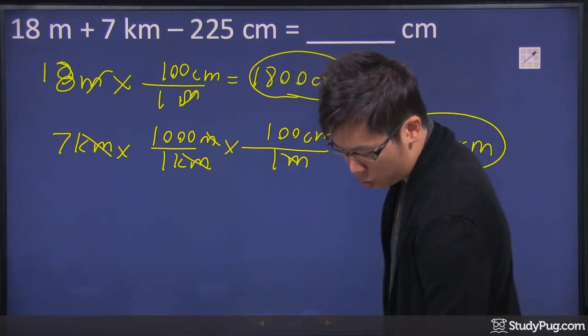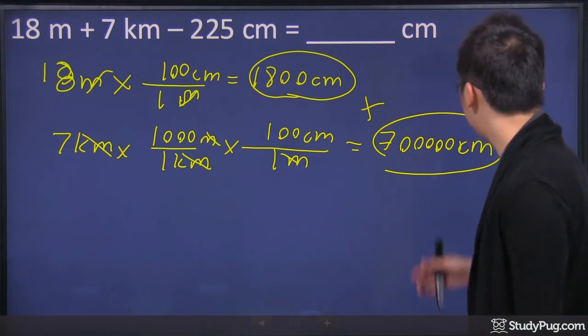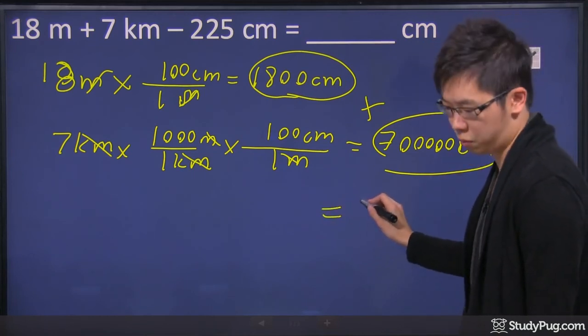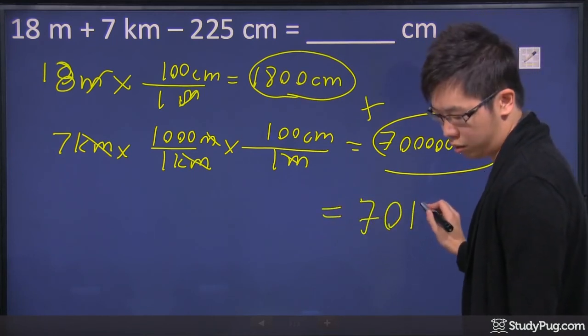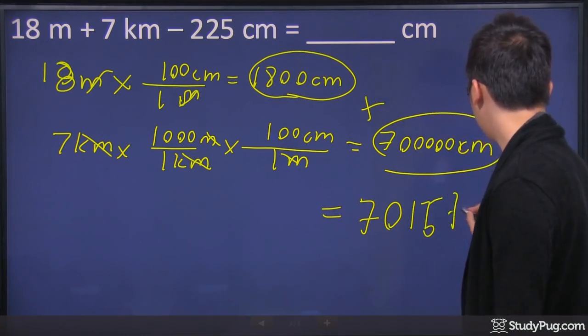So if you do the math correctly, you should get 701,575. So the total should be 701,575.